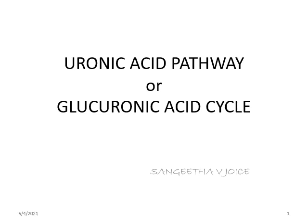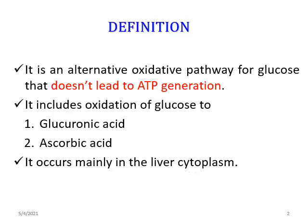Hello everyone, Sangeeta Joyce here. Today's topic for discussion is the uronic acid pathway, which is also known as the glucuronic acid pathway. The definition for uronic acid pathway: this is the pathway which occurs in the liver for the conversion of glucose to uronic acid and ascorbic acid.